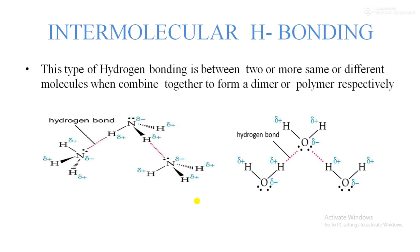Intermolecular hydrogen bonding occurs between two or more same or different molecules when they combine together to form a dimer or polymer hydrogen bonding system. In this type, two different molecules can form hydrogen bonds, as represented here by the dotted line. This is an ammonia molecule.